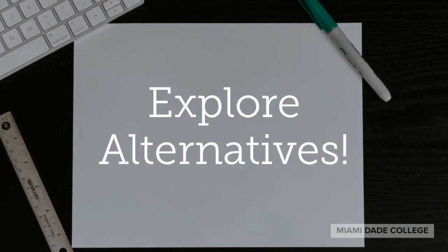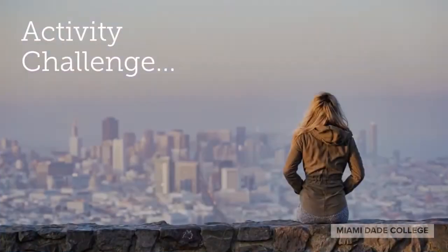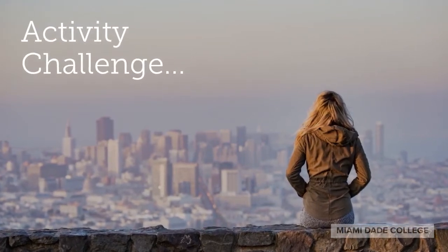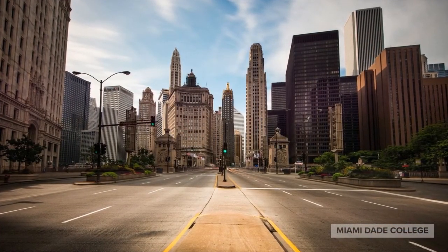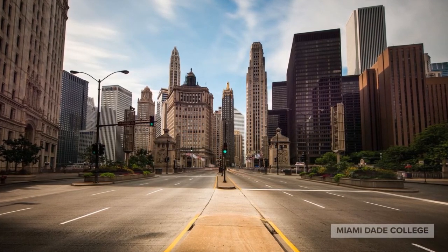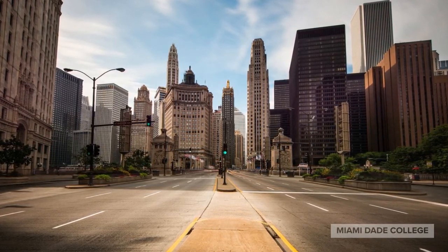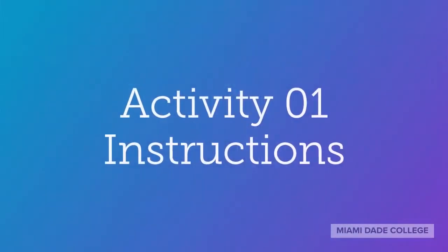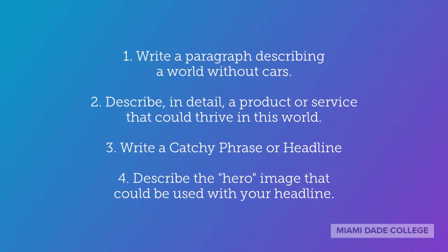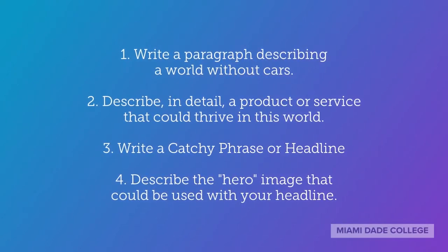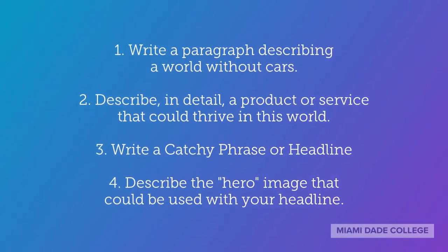In this brainstorming activity, and also in Project 1, you're going to try to set aside your preconceived notions and explore alternatives. I want to challenge you with an exercise in which you'll have to use your imagination. Imagine a world without cars. What would that look like? How would we get around? How would we travel long distances? How much longer would it take to get from place to place? What alternatives might emerge? First, write a paragraph describing a world without cars. Next, describe in detail a product or service that can thrive in this world. Write a catchy phrase or headline. Finally, describe a hero image that could be used with your headline.